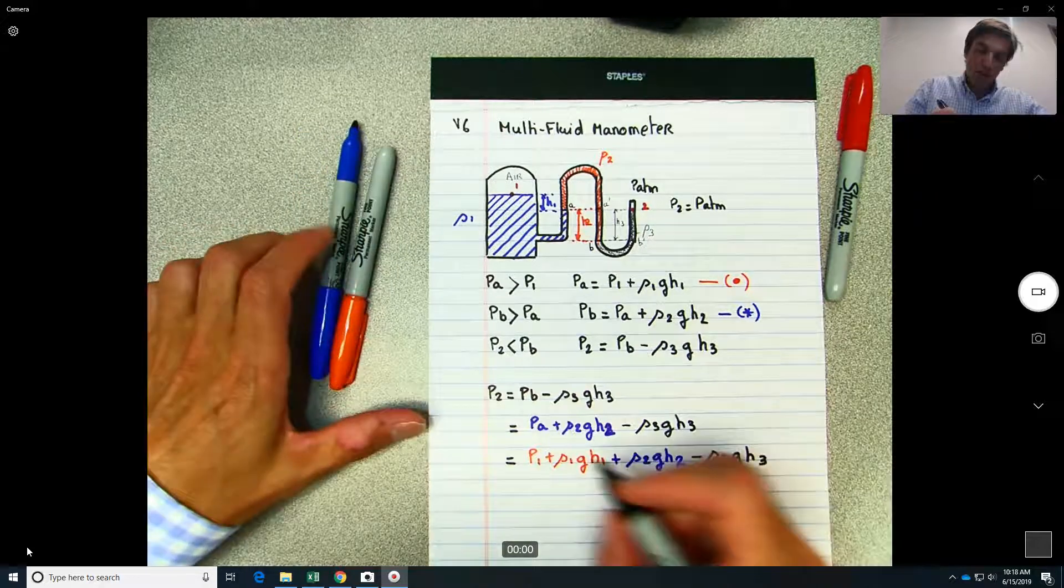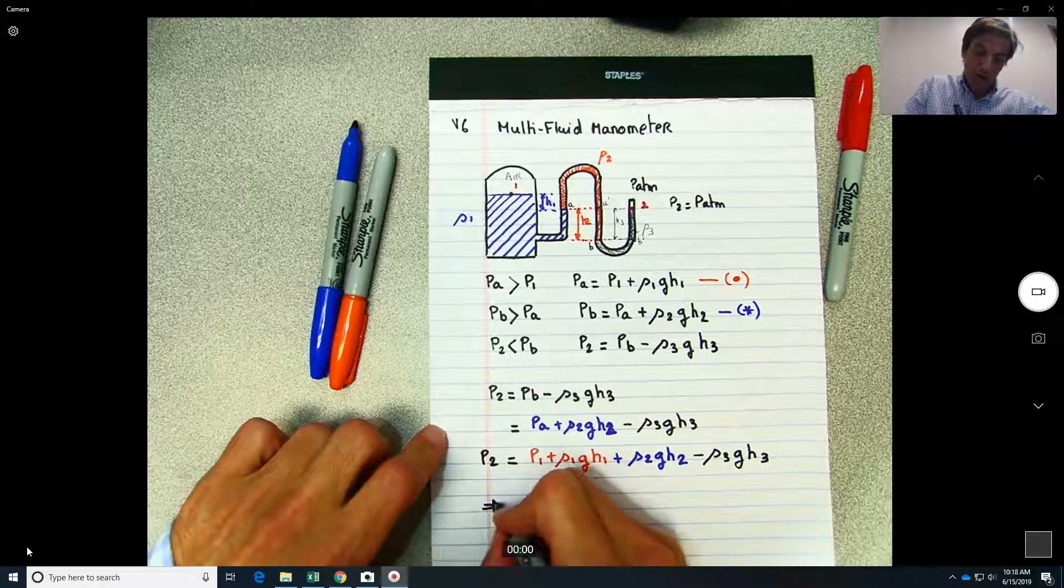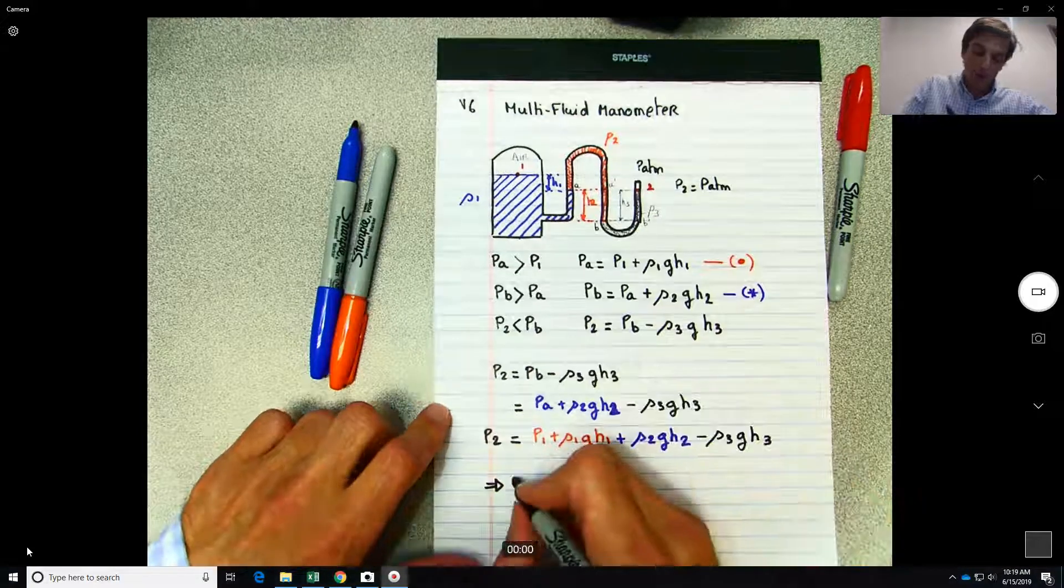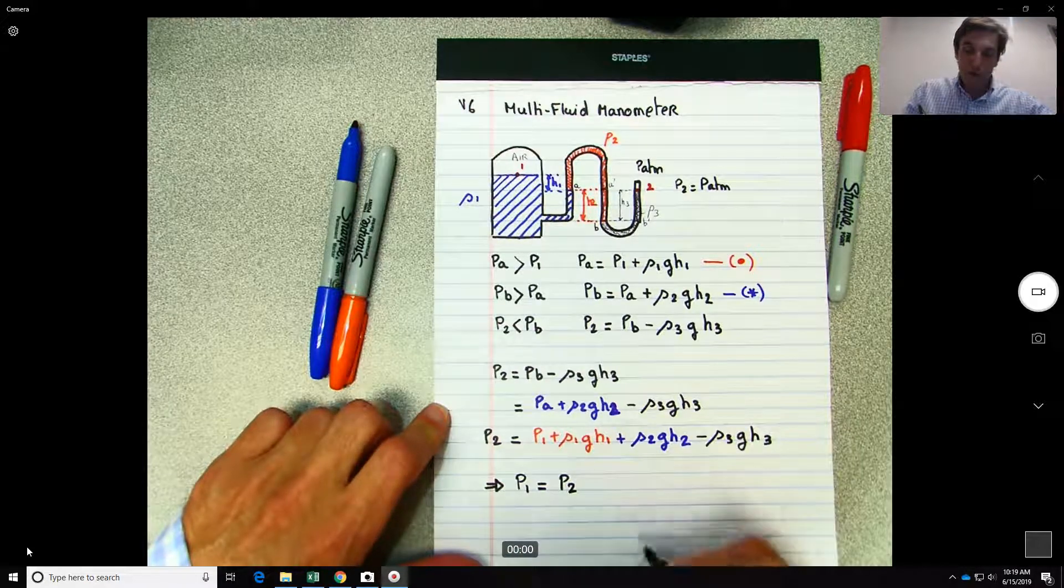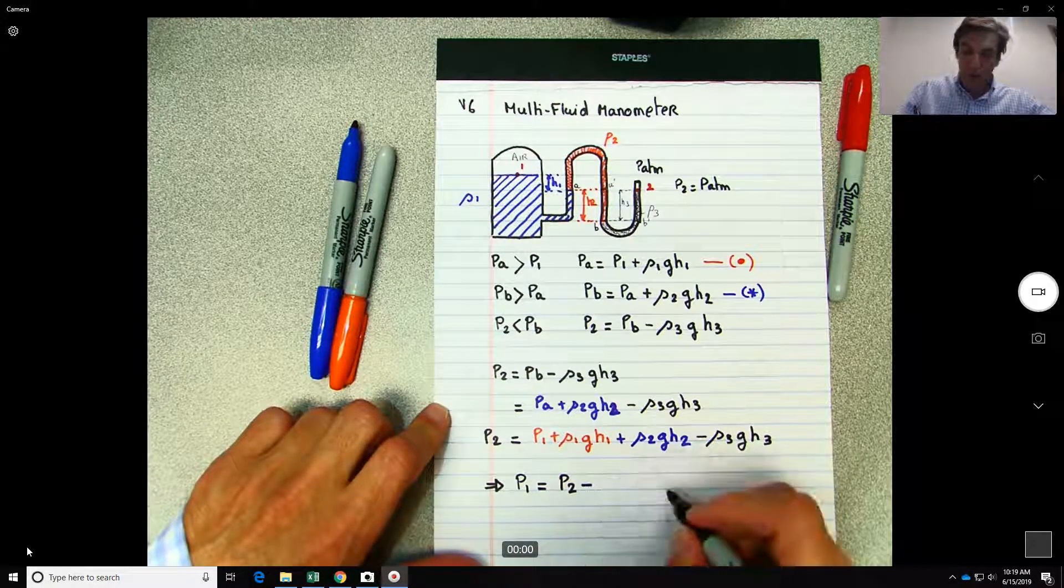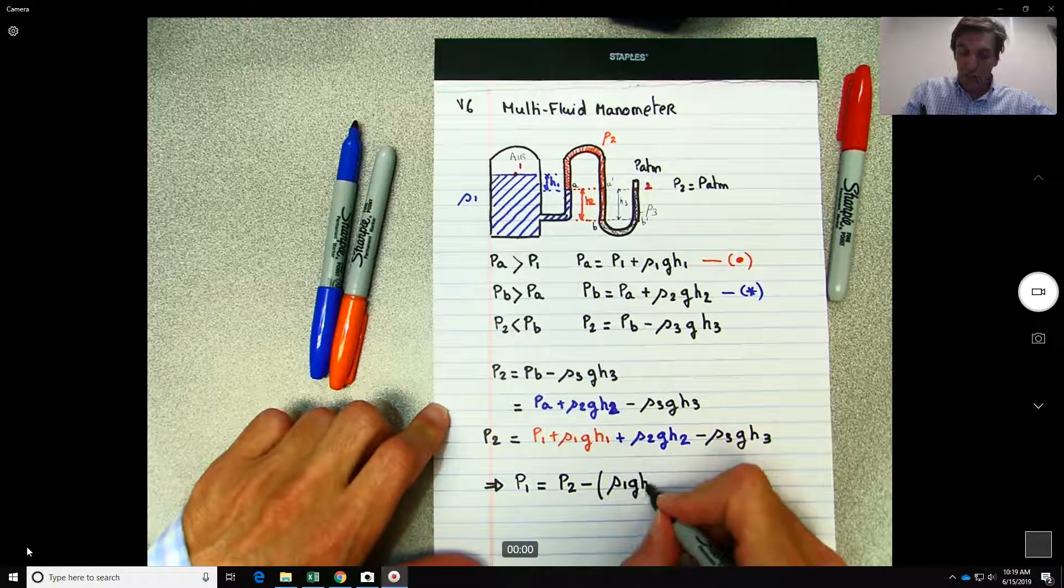Okay, so that should be equal to P2. So finally, what are we trying to solve here? We're trying to solve for P1. So we can just say P1 will be equal to P2 minus rho 1 G h1.